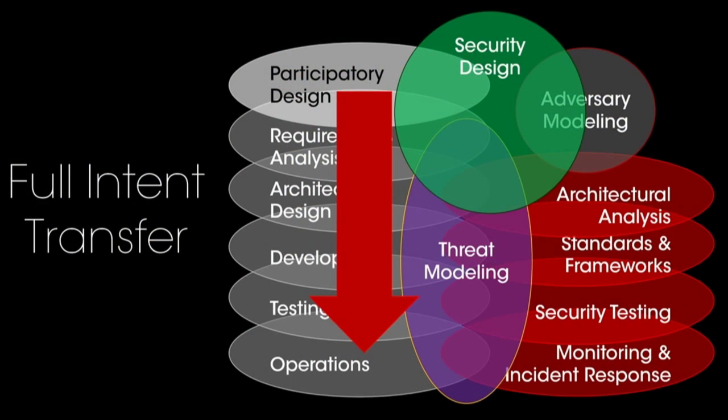Adversary modeling and participatory design are the two foundation activities, and on top of them we build security design. The goal of all of these things is intent transfer. Your users have some intent — a thing that they want to get done in the world — and they have adversaries they're worried about. You need to accurately capture that intent in full detail and transfer it down every stage of the operations, deployment, and development stack. If you screw up at any point and something gets lost at some stage, that's bugs — and the further up it gets lost, the worse it is.